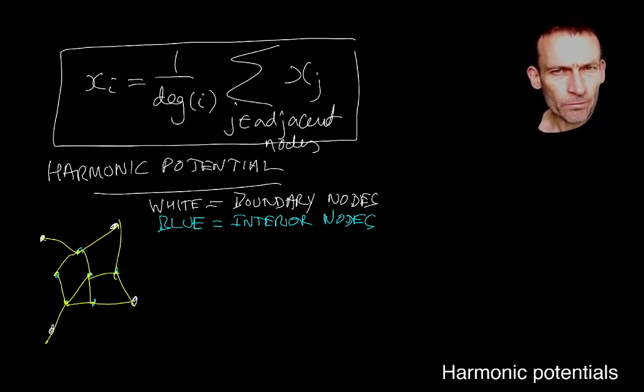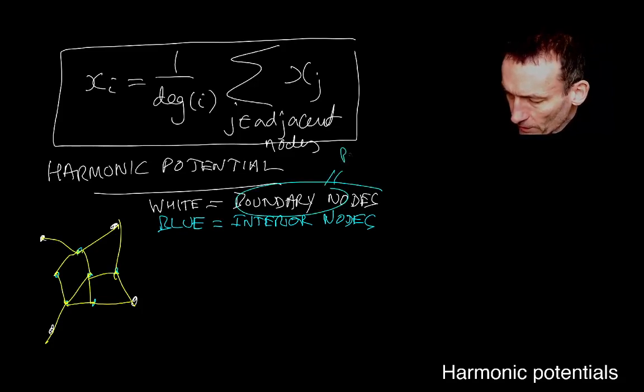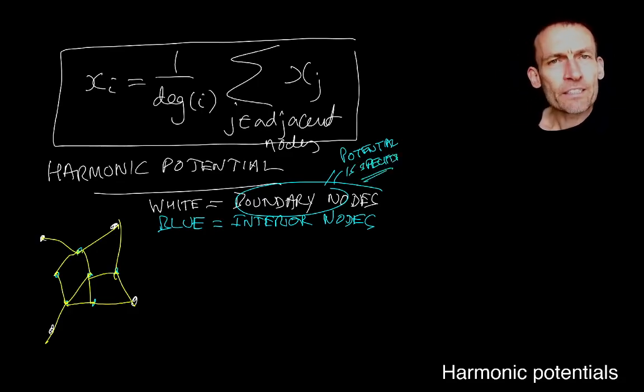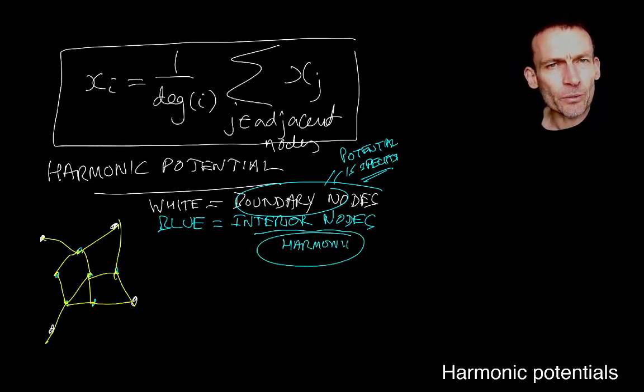Those are just names that turn out to be convenient later on. And you're probably wondering why they're called boundary and interior nodes. Well, boundary nodes, here's the thing. Boundary nodes, this means the potential is specified by me. I decide what the potential of the boundary node is. And then in the interior nodes, the potentials are harmonic. So that's the delineation between the two. At boundary nodes, I set the potential. At the interior nodes, the potentials have to be harmonic.